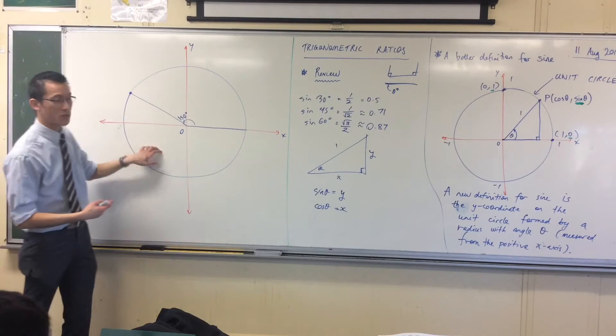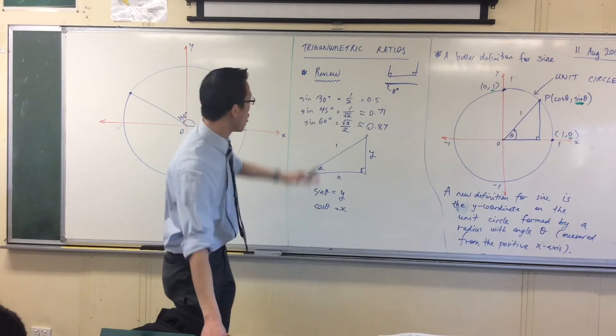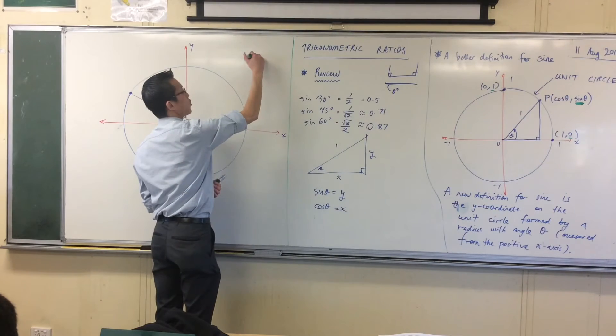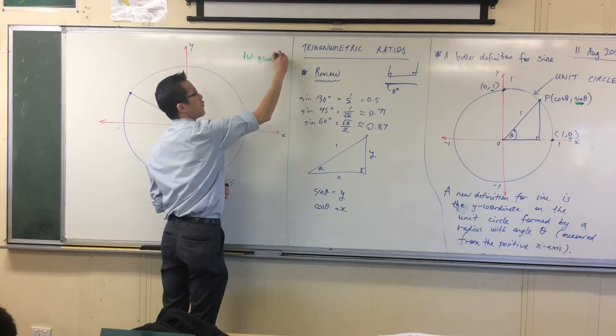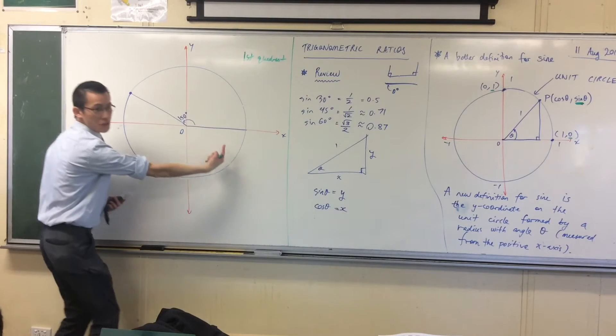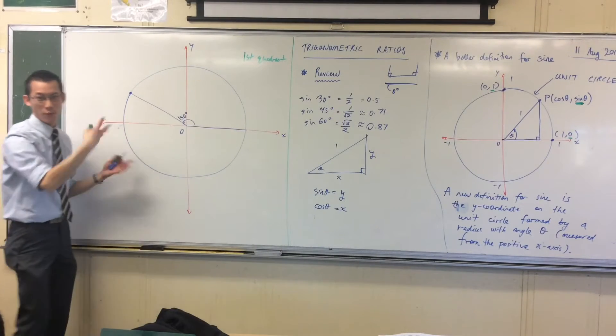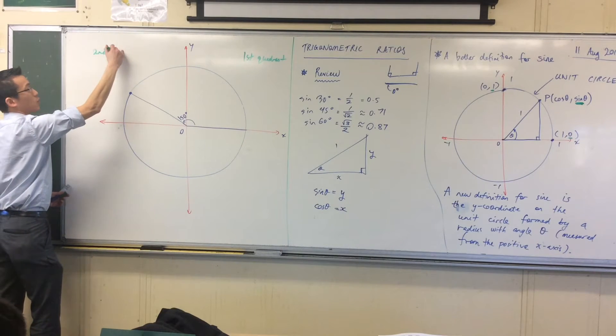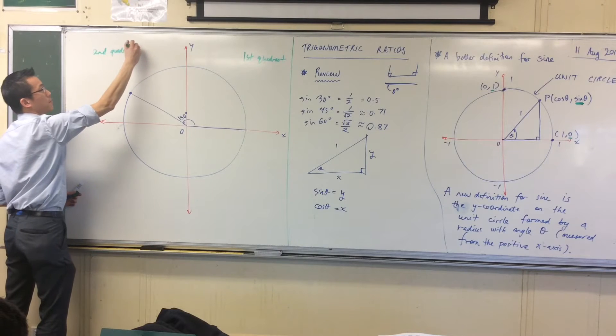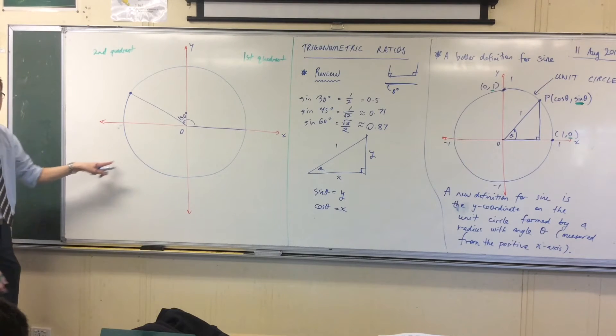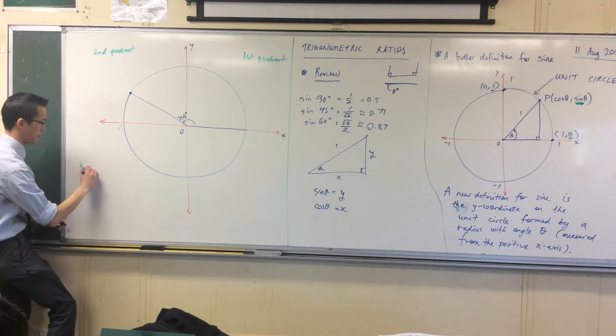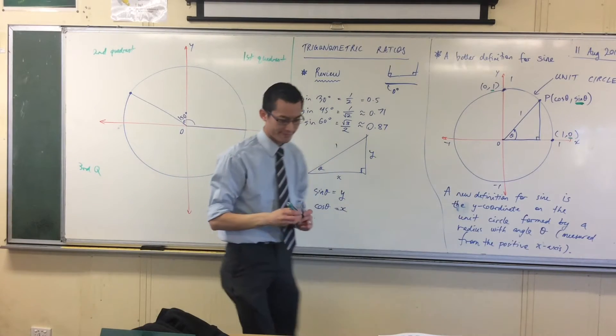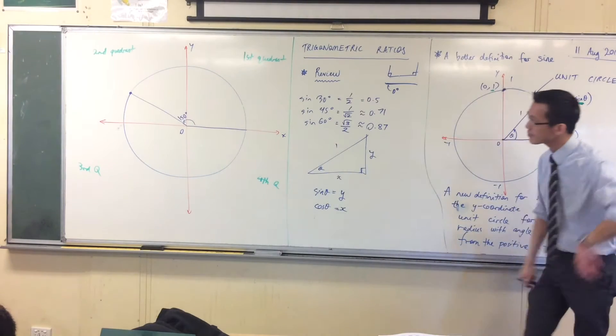You remember how I said I called these quadrants? We started over here in the top right, where everything's positive. And since we start there, we call this, like I mentioned before, the first quadrant. I am measuring anti-clockwise, which is a bit funny. It is in reverse. But if that's the first one, that makes this guy the second quadrant. Third and fourth.